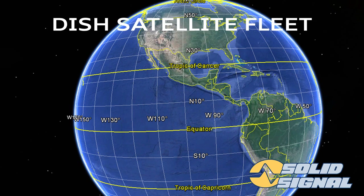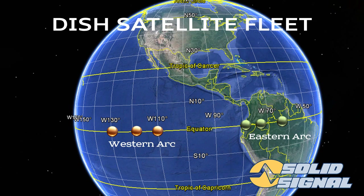On the other hand, DISH uses two completely different sets of satellites — one for the East Coast and one for the West Coast. The Western Arc covers most of the United States with three satellite locations at 110, 119, and 129. The Eastern Arc is over at 61.5, 72, and 77 degrees. Remember, these are locations — there can be more than one satellite at each location.